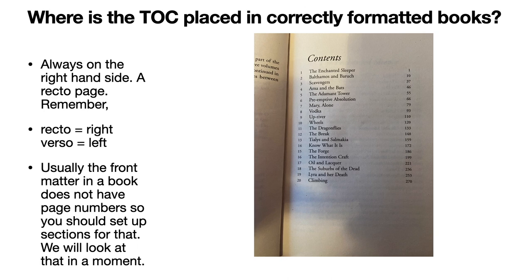Your table of contents always appears on the right-hand side — the recto page. Pick up nearly any book in a library and have a look. If you've got books on your shelves, you should have. Usually the front matter in a book does not have page numbers, so you can set up sections for that, and we'll look at that in a moment. I've done a complete video on sections and page numbering previously, so you might go back and have a look through that.